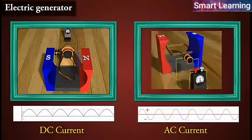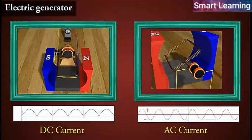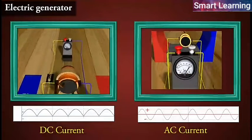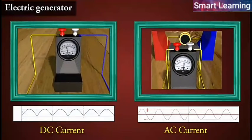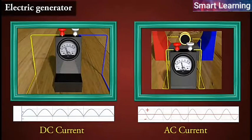The difference between the direct and alternating currents is that the direct current always flows in one direction, whereas the alternating current reverses its direction periodically.